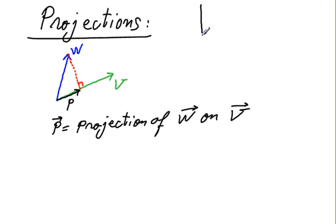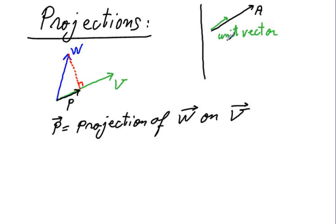We need two simple ingredients to build the projection formula. First: if I have a vector a and I want to make another vector in the same direction but of unit length — a unit vector — I simply divide that vector by its length. So the unit vector u equals a divided by the length of a.